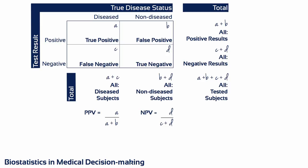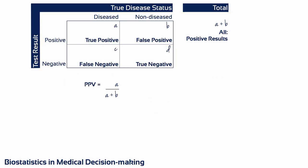This is the two-by-two table and equations needed to calculate positive predictive value and negative predictive value. To calculate positive predictive value, you need to pay attention to the top row of the table. Positive predictive value equals A divided by A plus B.